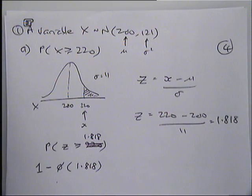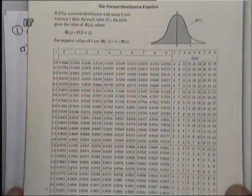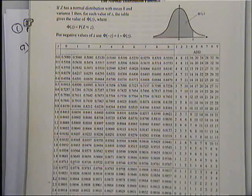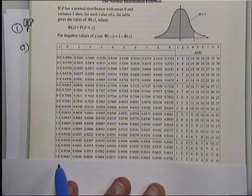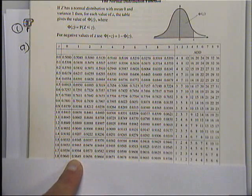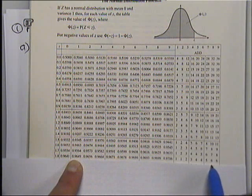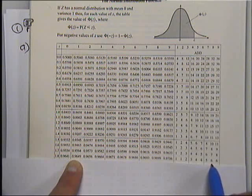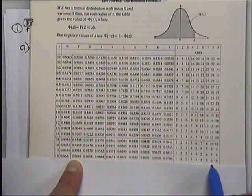So now what you need to do is look up this 1.818 in the tables. I want 1.8, which is down here, 1.81 is 0.9649. For 1.818 I need to come over to the last column, the 8, which has a 6, so it's going to be 0.9649 plus 6, which is 0.9655.